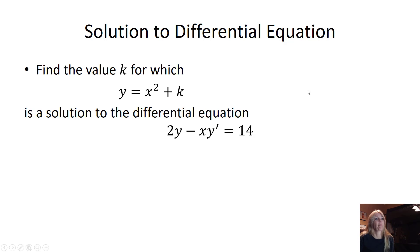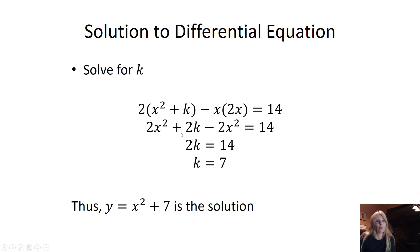If I'm given something that says find the value k for which y equals x squared plus some constant is a solution to this differential equation. Well, once again, looking at this, I see a y prime. So why not find y prime? 2x. That's a constant. So the derivative goes away. I plug in. My arrows are a little off here. I plug in where I see y prime. I plug in 2x. It's just like that other one. Where I see y, I plug in x squared plus k. And I work all this out and solve for k. And so as you can see so nicely, the 2x squares cancel. I get 2k equals 14. k equals 7.